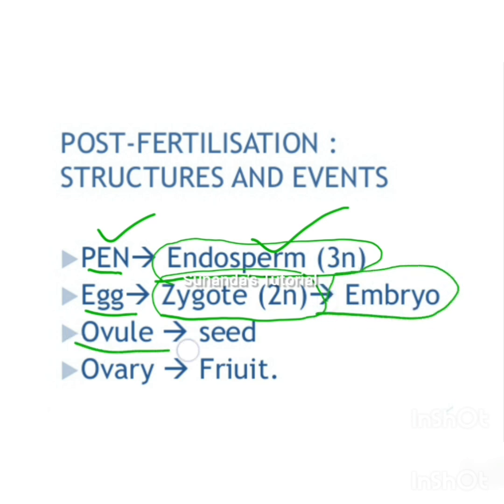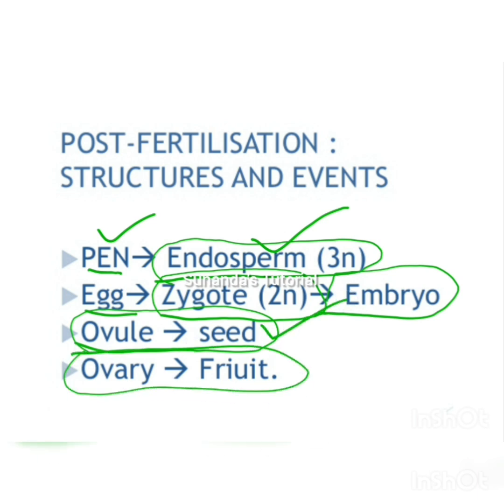The ovule is transformed into the seed and the ovary into the fruit. These four events occur after fertilization.